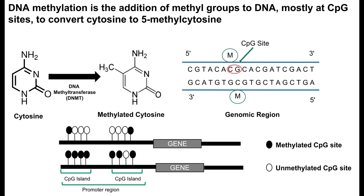What you'd notice is that DNA methylation occurs symmetrically on both sides of the strands, as you can see depicted by these M's. And it is found in CpG sites. A CpG site is basically an area where you have your cytosine next to your guanine. And in promoter regions, you have what are known as CpG islands, which are just clusters of CpG sites.